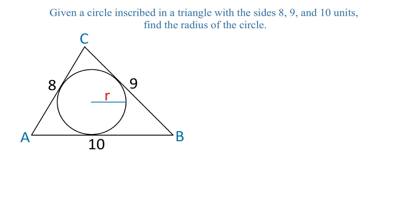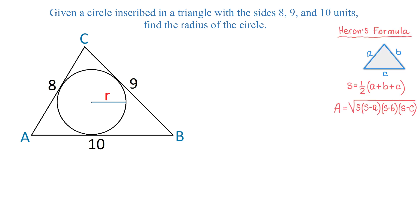Once we have the area of the triangle, you will see how we can form an equation that will give us the radius of the circle. In this triangle, because we are given all three sides, to find the area we will use Heron's formula. This formula has two parts. In part 1, we are finding half of the perimeter of the triangle with sides A, B, and C. Once we find number S, we use it in the second part where we find the area of this triangle. This formula is the square root of S times (S minus A) times (S minus B) times (S minus C).